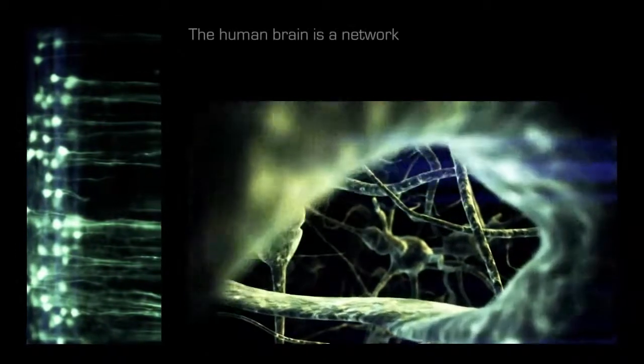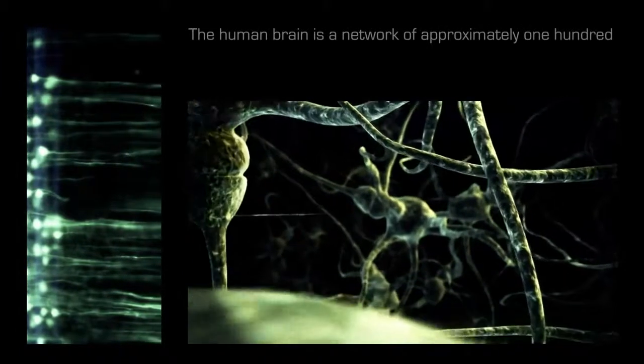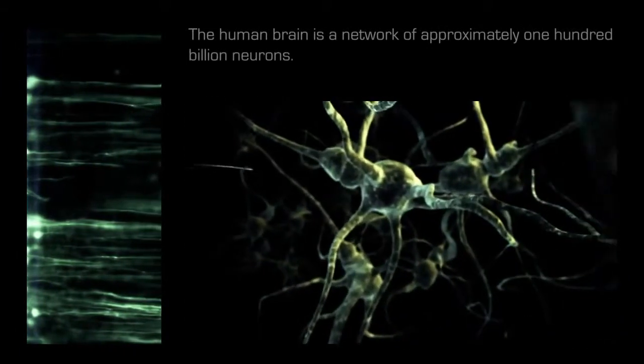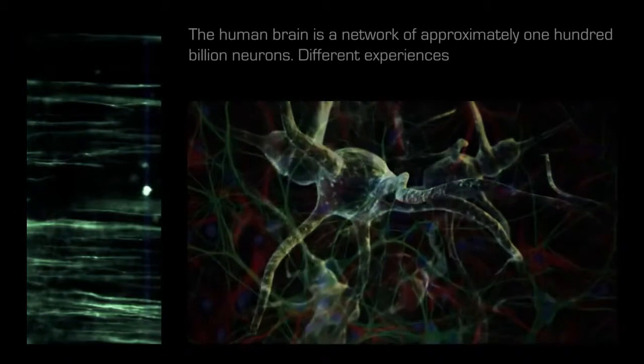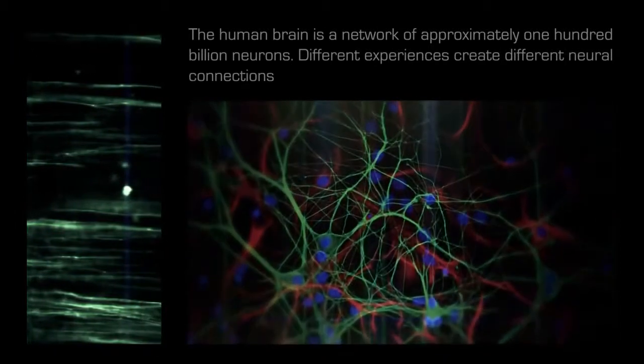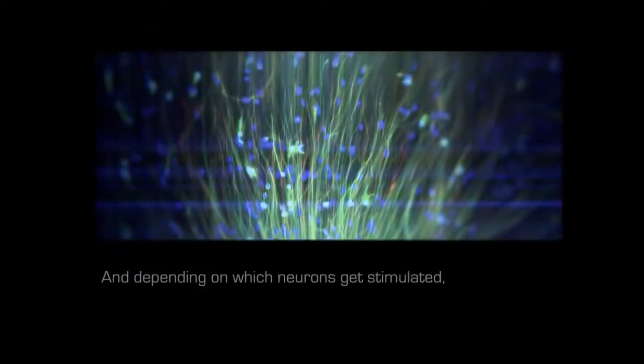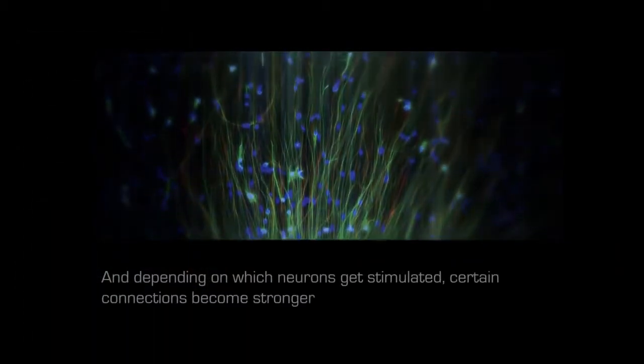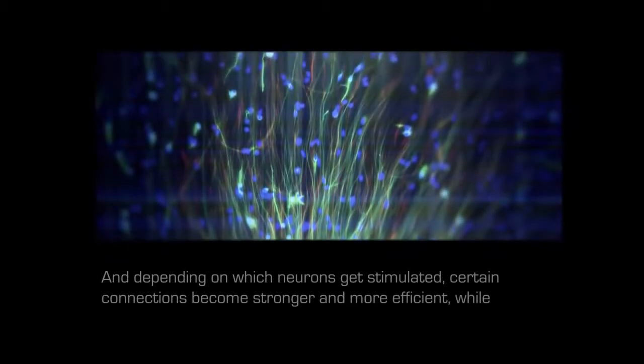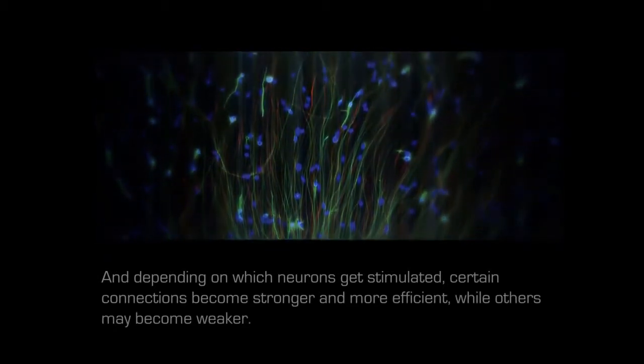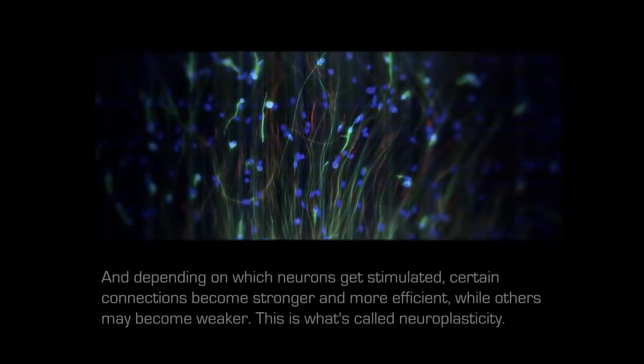The human brain is a network of approximately 100 billion neurons. Different experiences create different neural connections which bring about different emotions. And depending on which neurons get stimulated, certain connections become stronger and more efficient, while others may become weaker. This is what's called neuroplasticity.